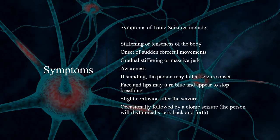Symptoms of tonic seizures include stiffening or tenseness of the body, onset of sudden forceful movements, gradual stiffening or massive jerk, and altered awareness. If standing, the person may fall at seizure onset. Face and lips may turn blue and the person may appear to stop breathing. There may be slight confusion after the seizure, and it is occasionally followed by a clonic seizure in which the person will rhythmically jerk back and forth.